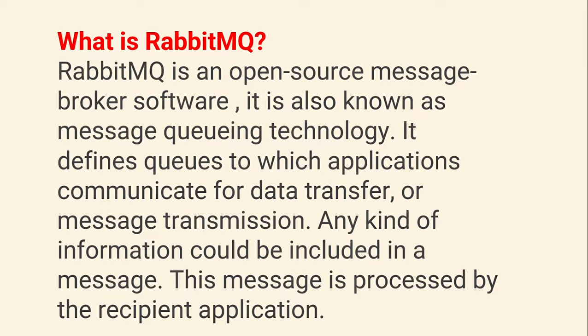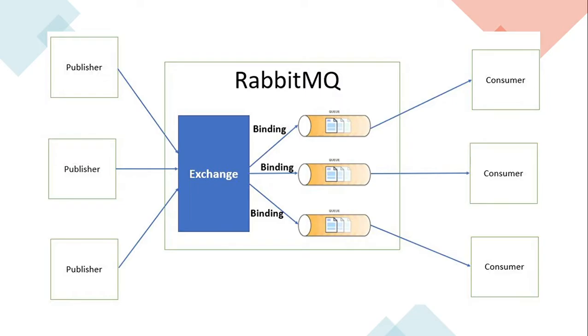What is RabbitMQ? RabbitMQ is an open source message broker software, also known as message queuing technology. It defines queues to which applications communicate for data transfer or message transmission. Any kind of information could be included in a message, and this message is processed by the recipient application. The typical architecture has a publisher on one side and a consumer on the other, with an exchange in between where the publisher sends the message and the exchange decides, based on routing rules, where it will go.